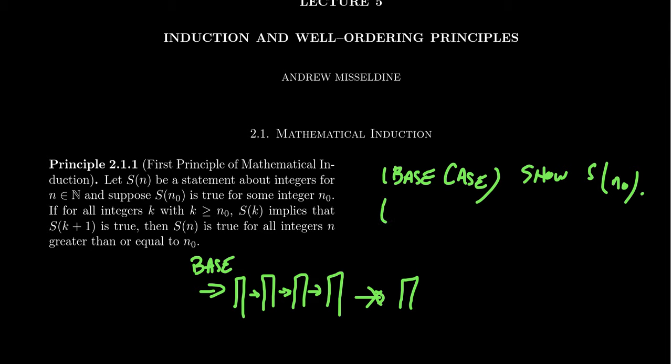The next part is what we call the inductive hypothesis, sometimes called IH for short. So the inductive hypothesis, what you're going to do is you're going to assume the statement is true for S_k, where the only thing we know about k is that k is greater than or equal to n_0. So we're going to assume that for some k, some integer k, this statement holds to be true.